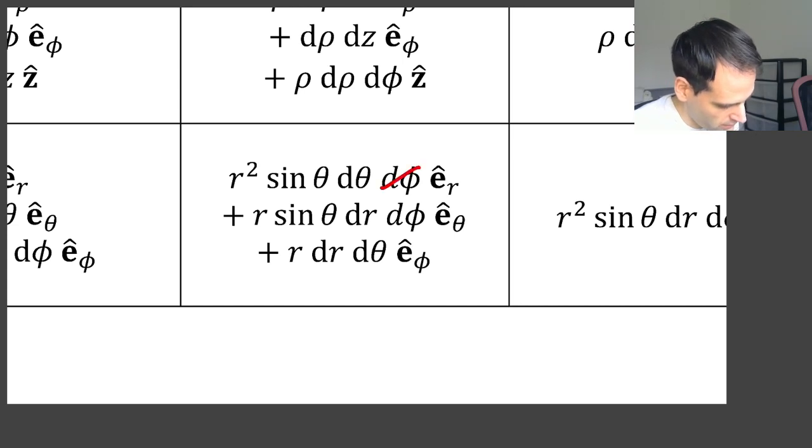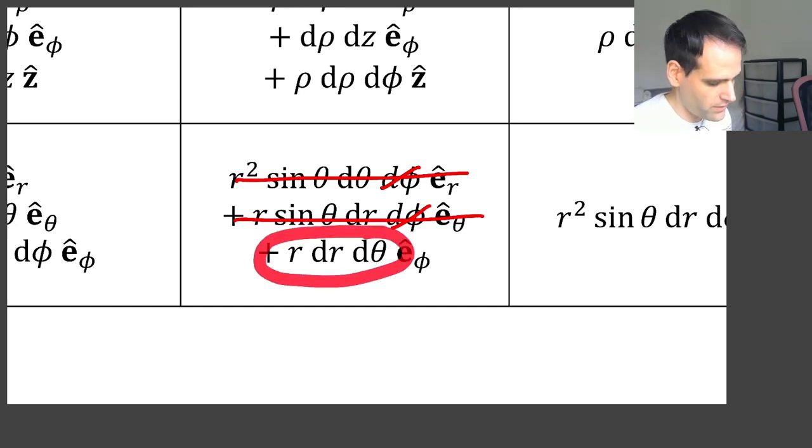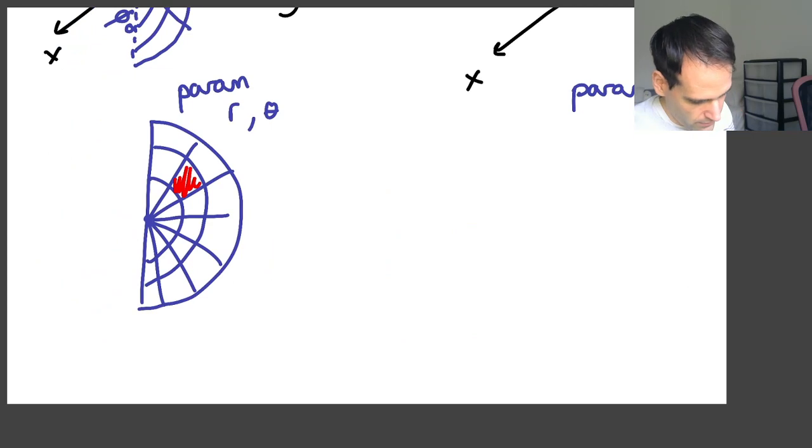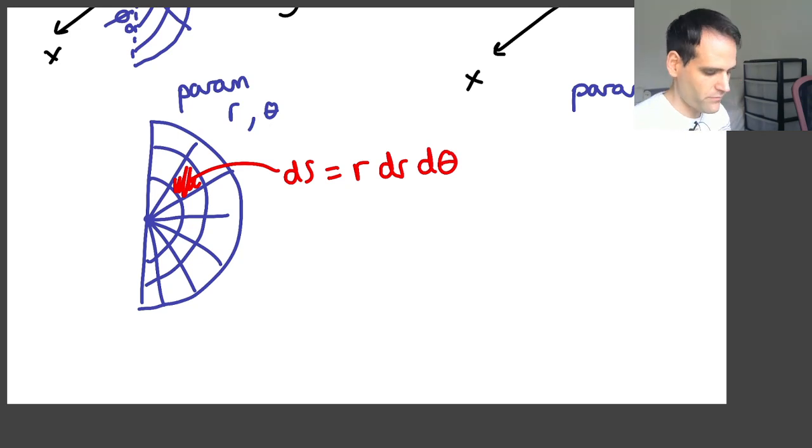So this is 0 and this is 0. So these two terms go away. And the term you are left with is r dr dθ. So that would be indeed this dS here. r dr dθ.